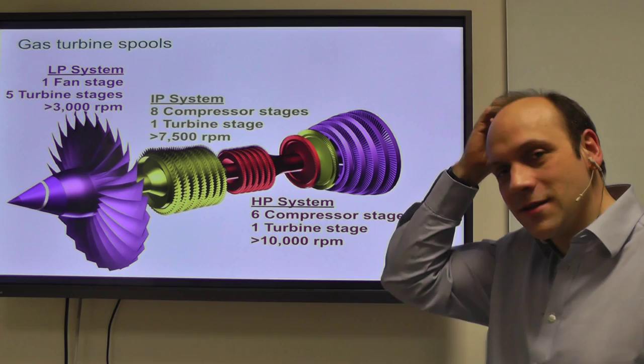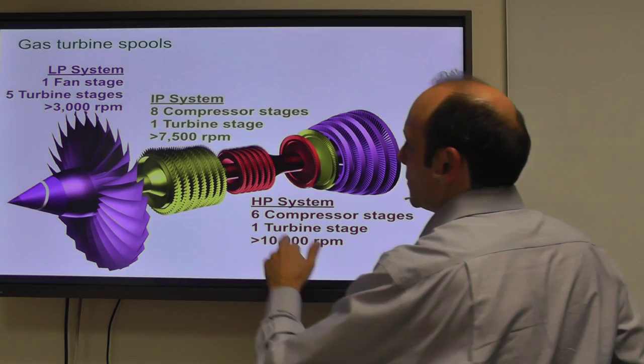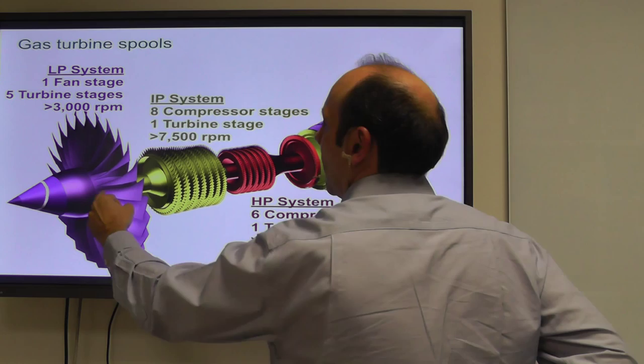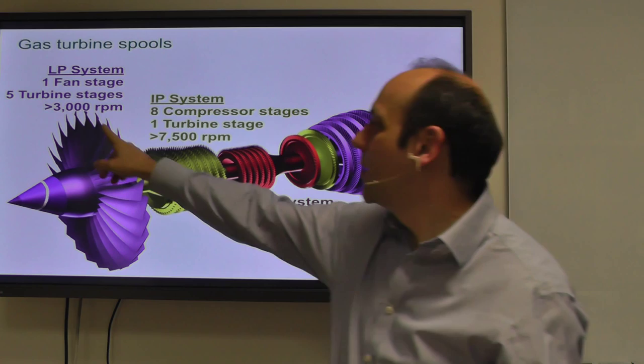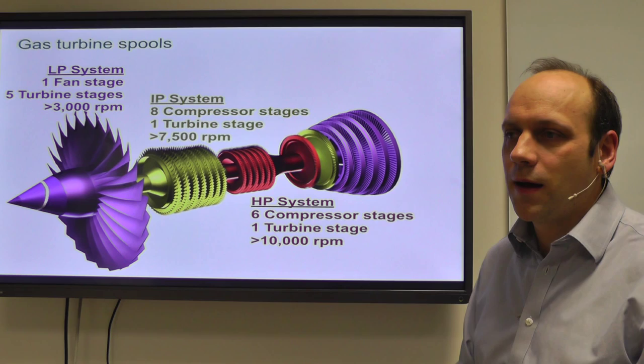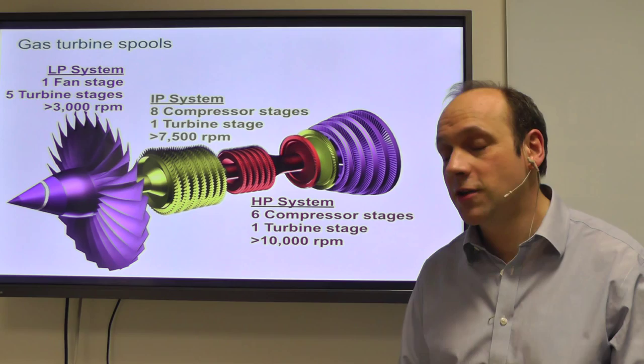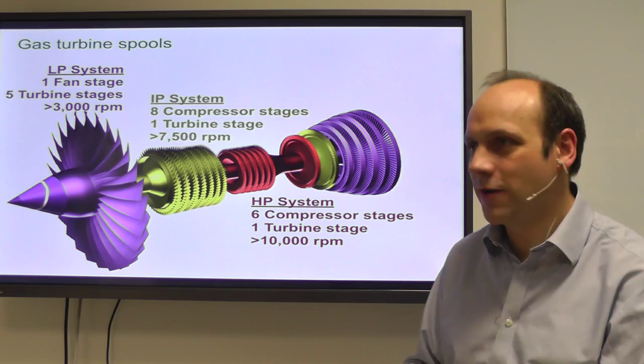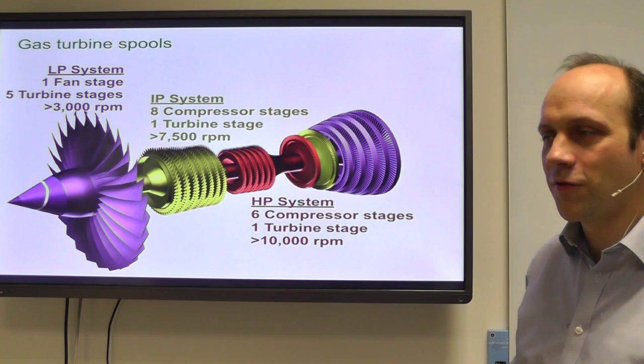The speeds are very different across the engine. With the big fan blade, you have large centripetal forces, so you need relatively low speeds to avoid going supersonic — that takes you down to 3,000 RPM. Whereas in the HP section you'll go up to 10,000 RPM. These aren't big speeds relative to a turbocharger, which gets up to 100,000 RPM, but turbochargers are much smaller. Big jet engines are limited by supersonic tip speeds and by the centrifugal forces they can handle, so 10,000 RPM is still pretty fast for a big structure.